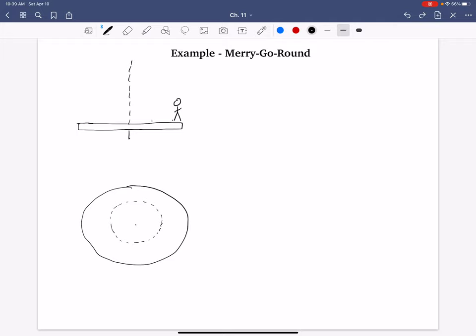So the problem situation, in other words, what I've drawn here is two different views of this merry-go-round. We have a side view and a top view. We have a person standing on the edge at a distance of six meters from the center. So the radius of this merry-go-round or carousel is six meters.